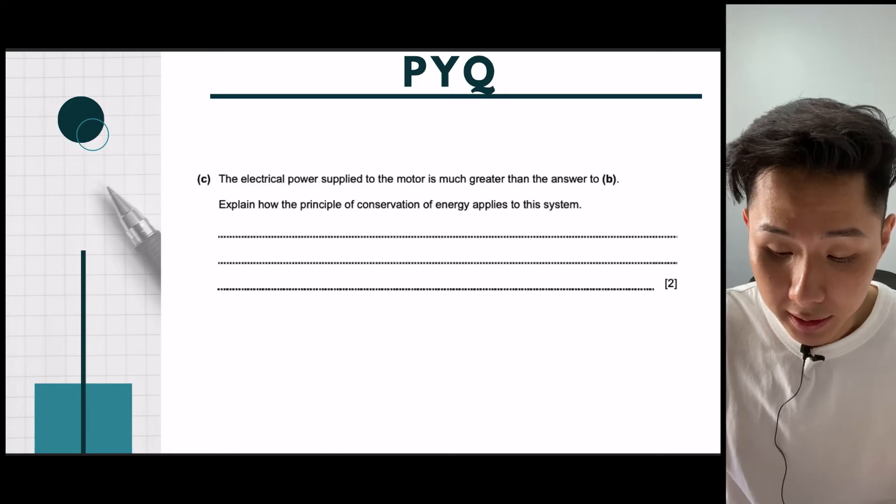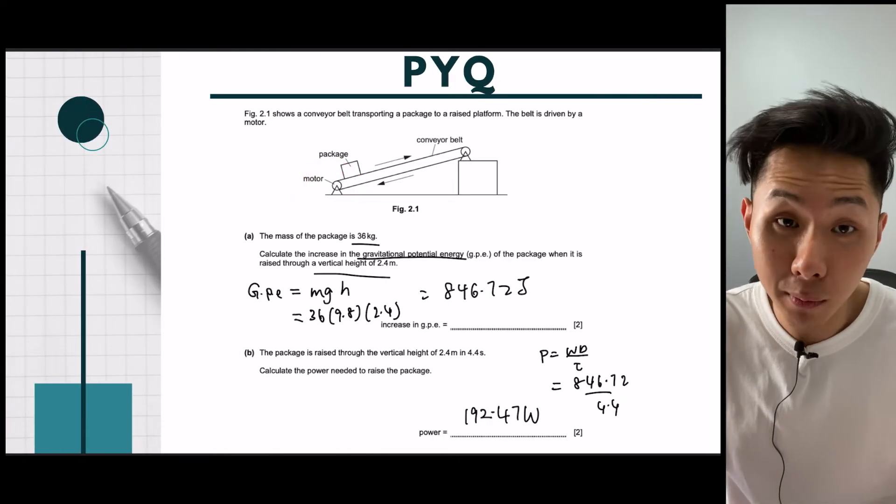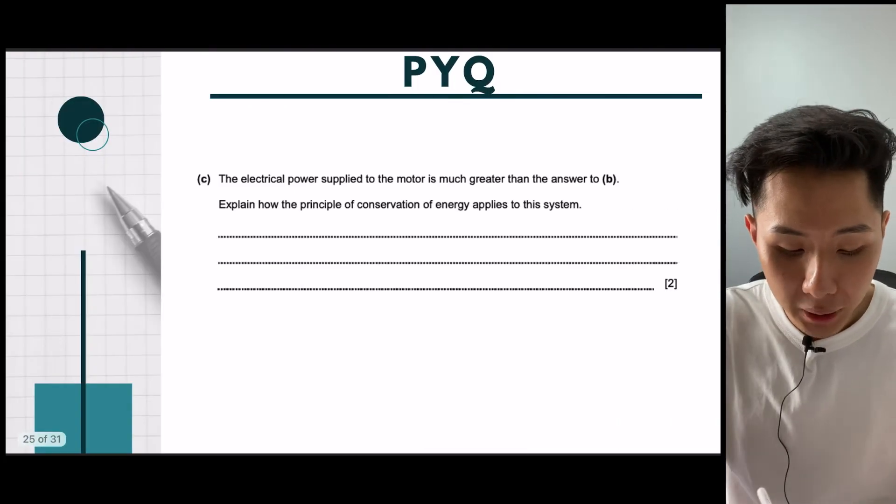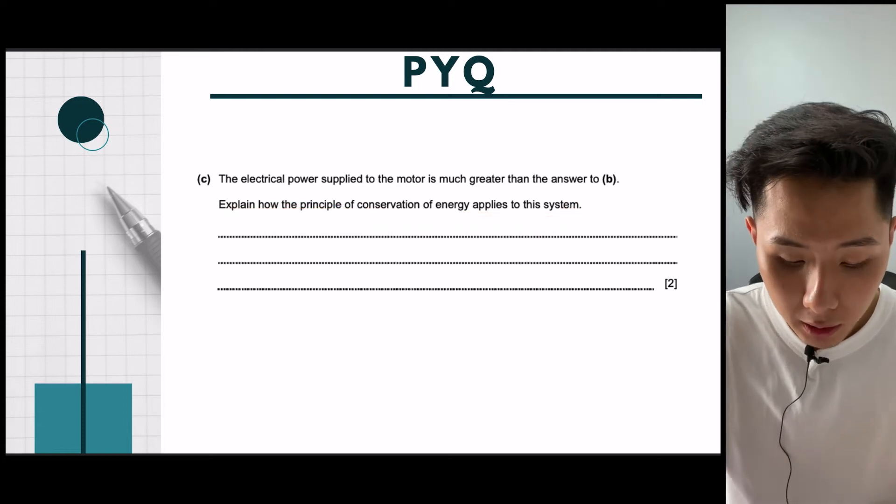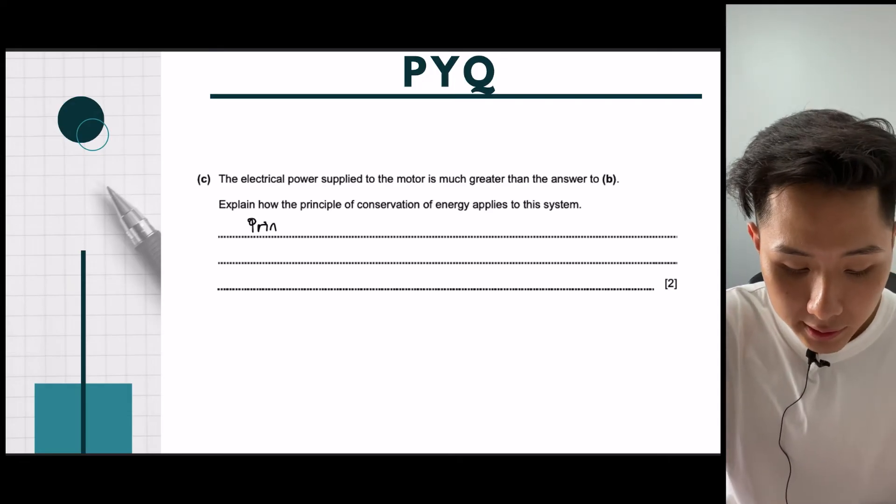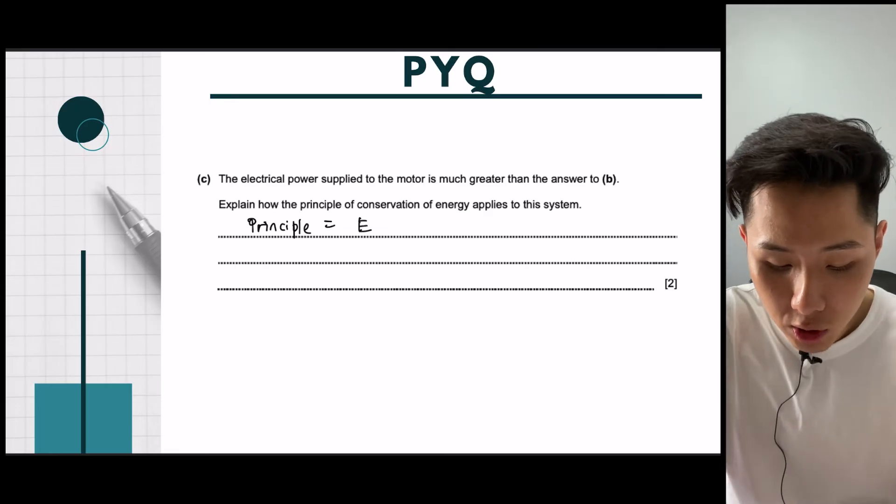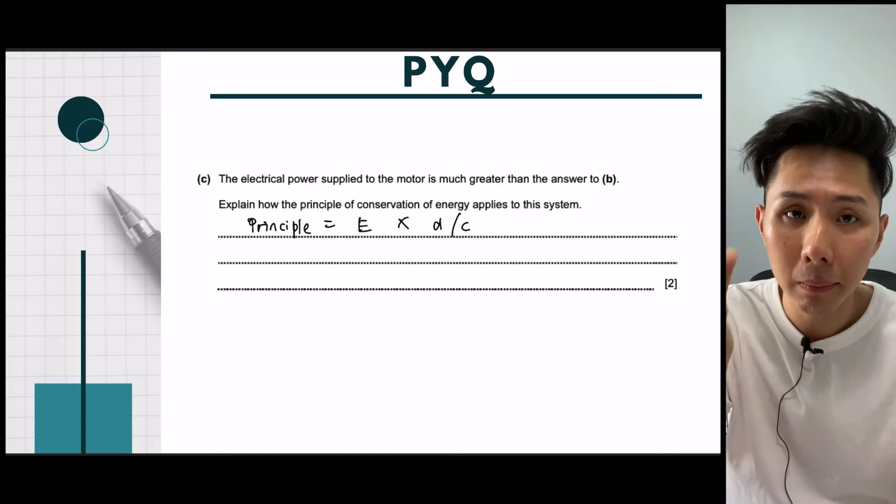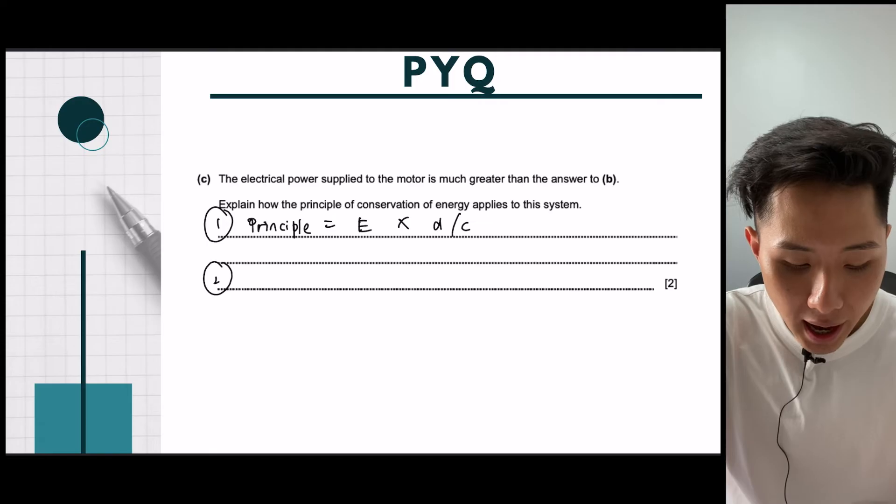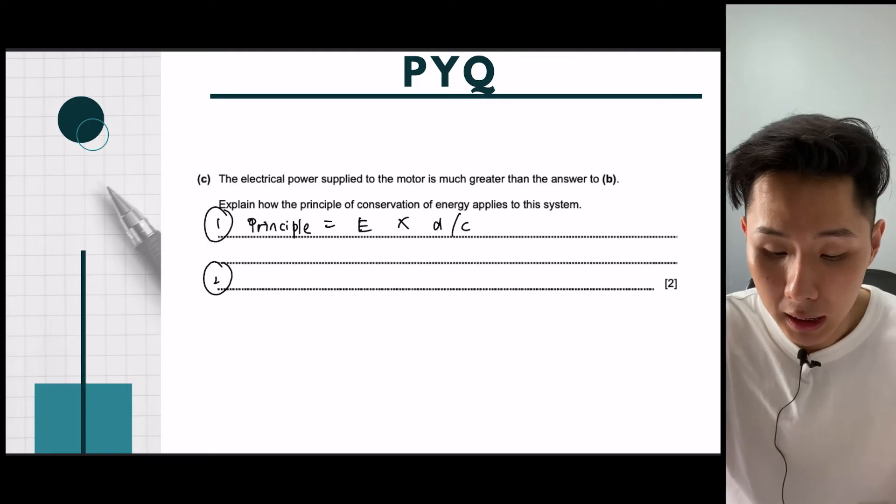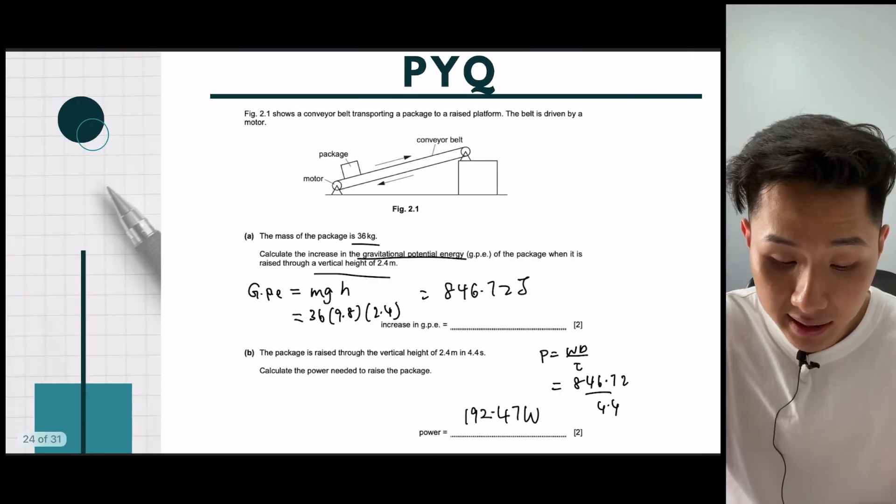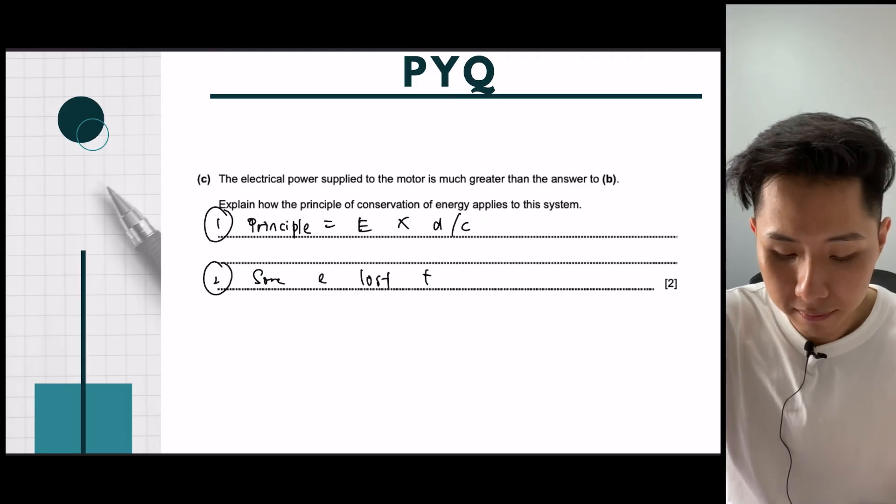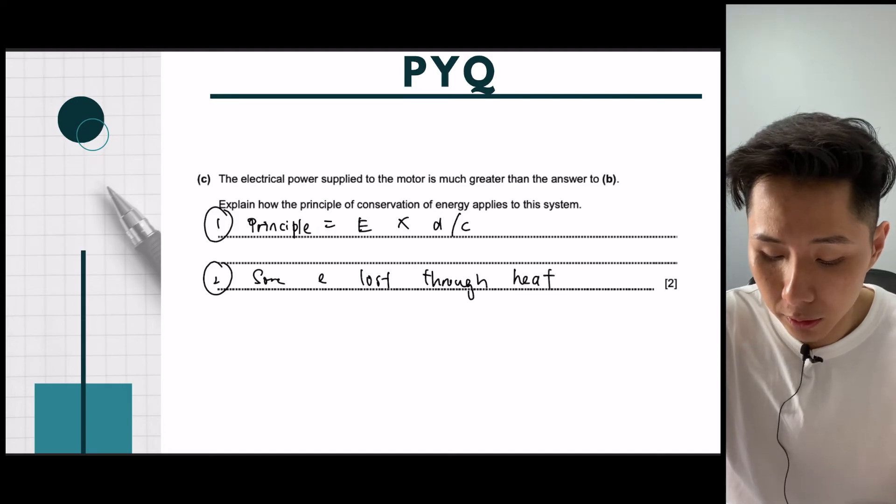The electrical power supply to the motor is much greater than the answer to B. What they're saying here is that the motor actually has more power. They provide more power, but why is it that the package only gained this amount of power here? So we need to explain using the principle of conservation of energy. Firstly, we need to talk about what the principle is. So you can give an example of how energy cannot be destroyed or created. And you could even write down an equation that shows energy supplied equal to energy useful plus wasted energy. For that you'll get one point. And the second point is when you explain where does the energy go, where does it loss to? So some of the energy loss could be heat because when motor moves, they usually generate heat. So you can say some of the energy is lost through heat.